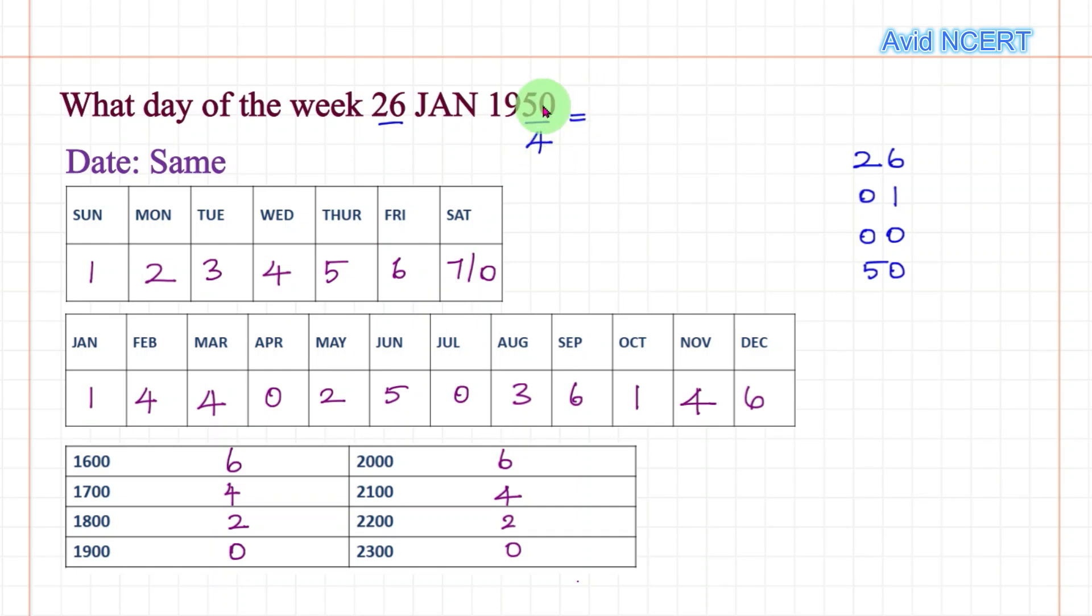The quotient is 12. We don't want the remainder here, we are just taking the quotient. So quotient here is 12, write the 12. Add all of them.